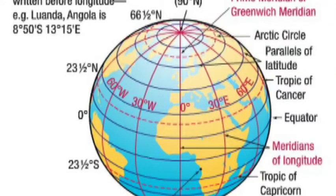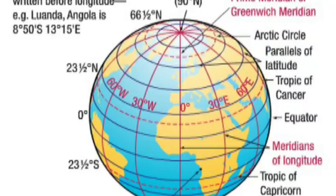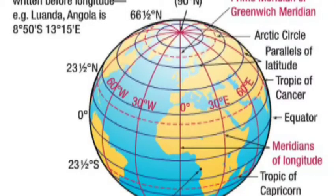At 66 and a half degrees South, parallel to the equator, that is called the Antarctic Circle. The summer of the Southern Hemisphere occurs on December 21st. So in the Southern Hemisphere, summer is on the 21st of December.